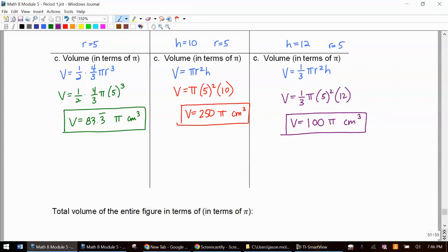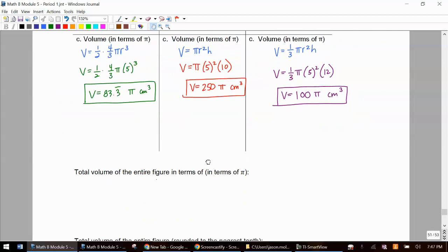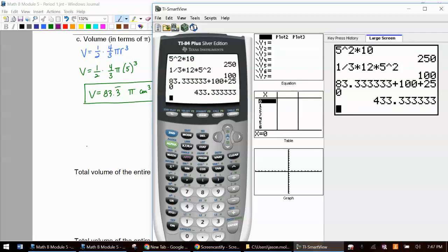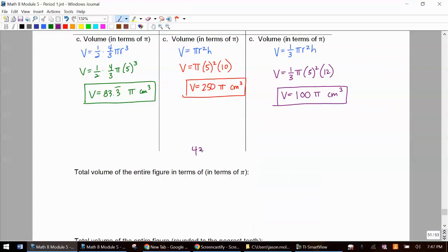We don't do this too often, but we'll try to answer this one in terms of π. So we've got 83.3 repeating. You can type a couple of those, plus the 100 and plus the 250. So we have 433.3 repeating π cubic centimeters. So there's our total volume in terms of π. I just put it there instead.